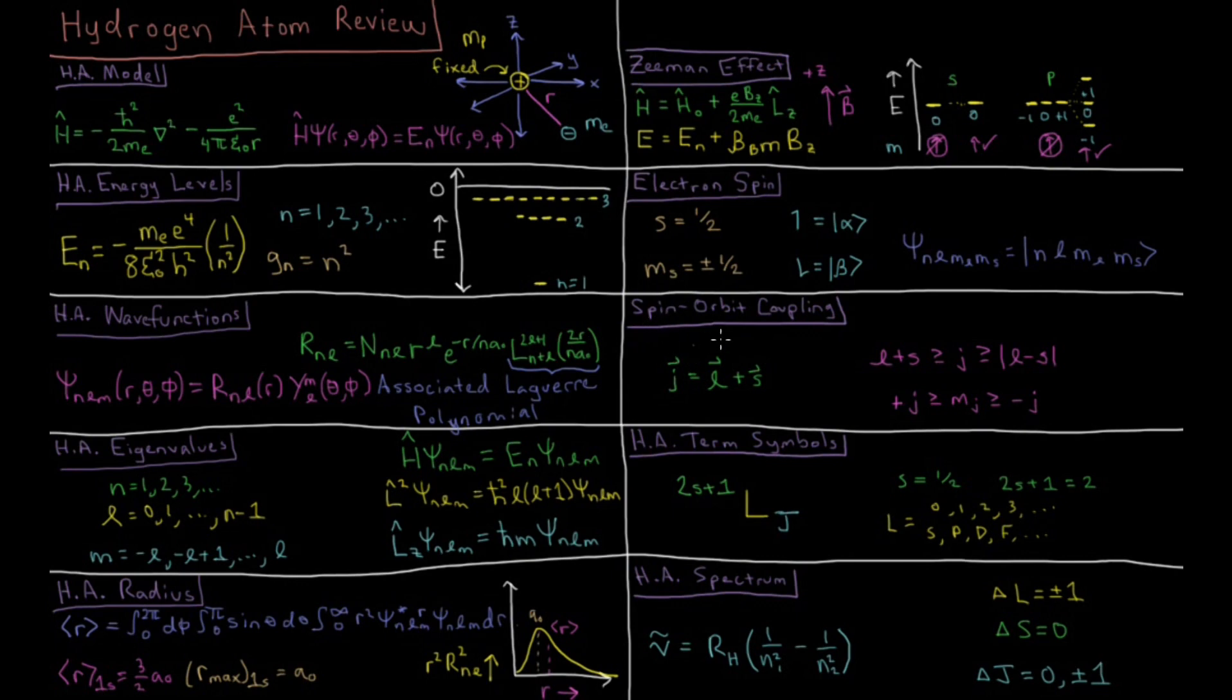We can have coupling between the orbital angular momentum l and the spin angular momentum s in this total angular momentum j through a spin-orbit coupling operator. The values of j can go from l plus s down to the absolute value of l minus s. j is either an integer or half integer.